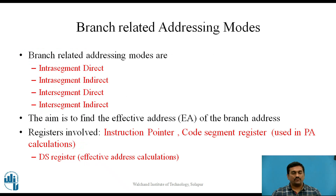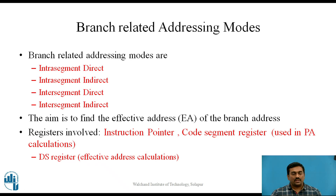In this video lecture we are going to study branch-related addressing modes, which are classified into 4 groups: intrasegment direct, intrasegment indirect, intersegment direct, and intersegment indirect addressing modes. The aim is to find the effective address of the branch address. The registers involved are the instruction pointer and the code segment register, both used in physical address calculation. The physical address is the branching address where control will be transferred in case of branching instructions.